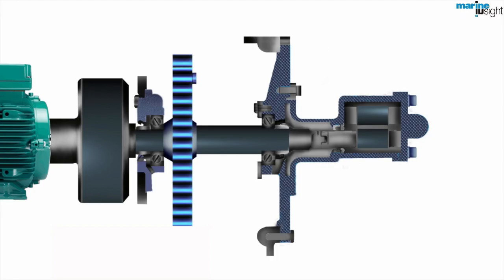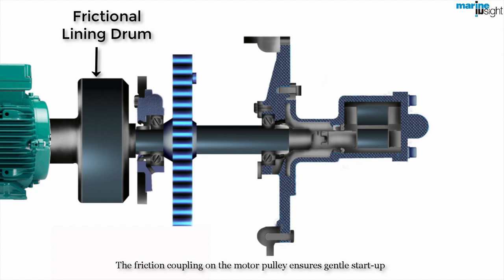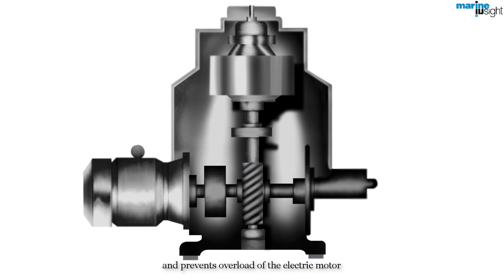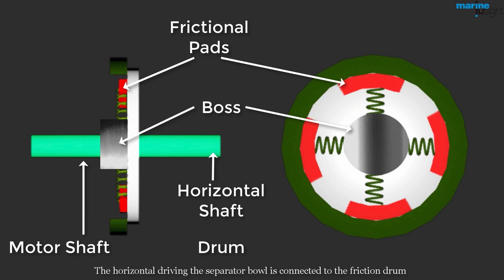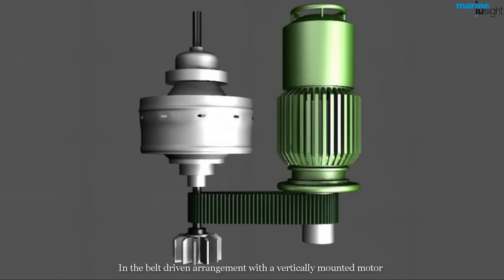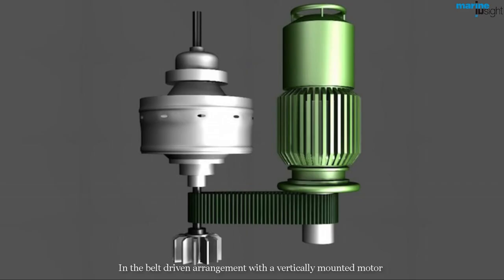The friction coupling on the motor pulley ensures gentle start-up and prevents overload of the electric motor. In the shaft-driven separator, the motor shaft is connected to the boss, which carries the frictional lining pads. The horizontal shaft driving the separator bowl is connected to the frictional clutch drum. In the belt-driven arrangement with the vertically mounted motor, the frictional drum is provided on the motor shaft, which carries the belt to drive the vertical shaft of the separator.